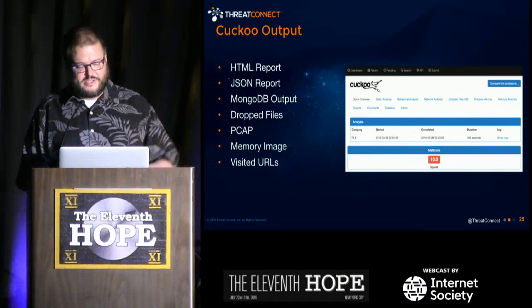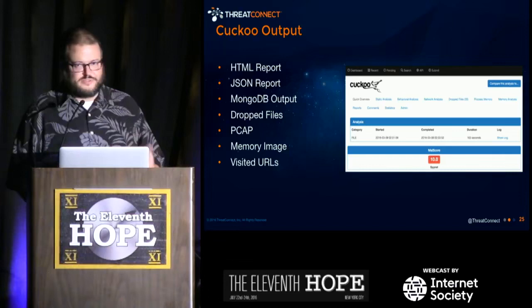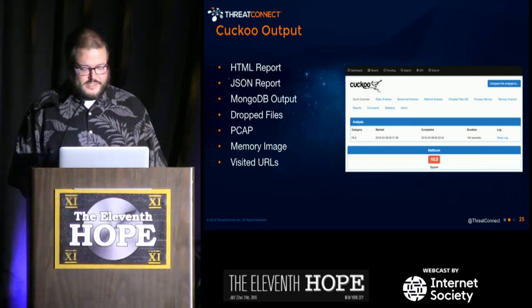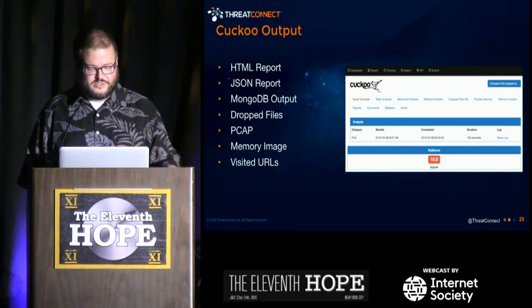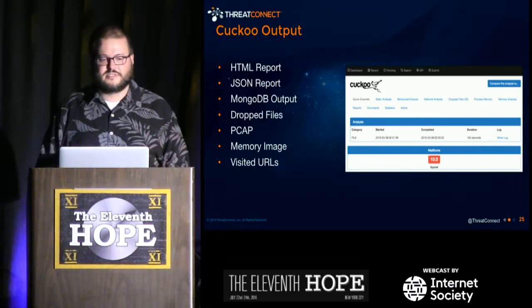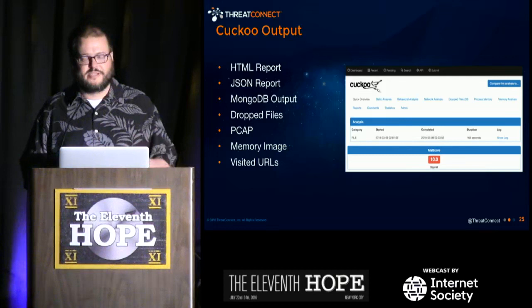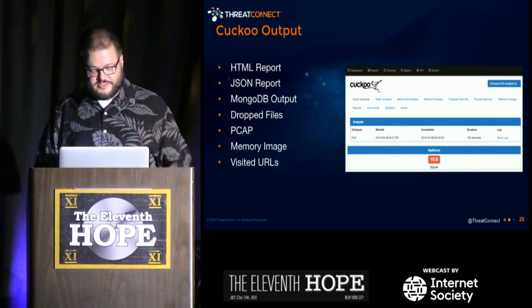Cuckoo has a number of different outputs: HTML, JSON, etc. It has dropped files — and if there's a dropped file you often want to re-sandbox it. It produces PCAP you can analyze with Bro, and memory images — though there's a nuance: Cuckoo's techniques dirty the memory image, so I suggest you create a clean memory image to use with Volatility separately from Cuckoo. It also produces visited URLs that you would want to look at with Thug.